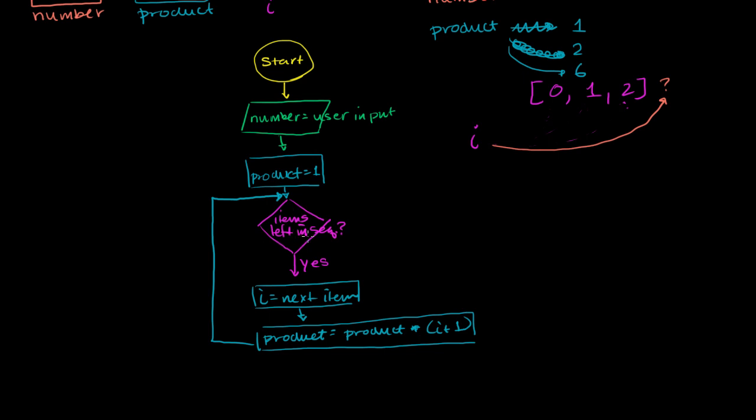If there is another item in the sequence, then i is equal to the next item, and product is equal to what product was times i plus 1, and we go to the next. Are there items left in the sequence? And at some point there won't be any items left in the sequence. And we could go to the right, or I'll just break out of it down here. And now we've broken out of this for loop.